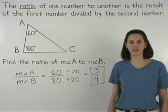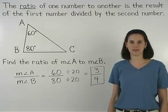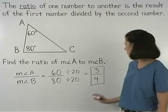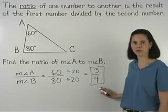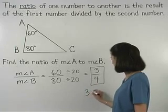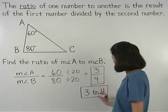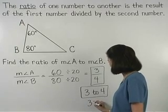It's important to understand that a ratio can be written in three different ways. For example, the ratio 3 fourths can also be written as 3 to 4 or 3 colon 4. Make sure you're familiar with all three ways to write a ratio.